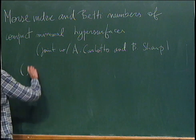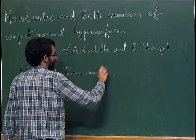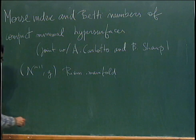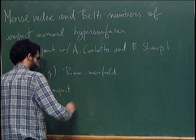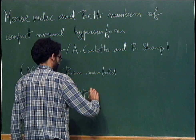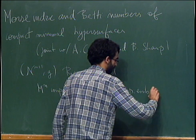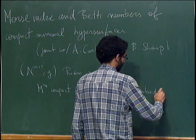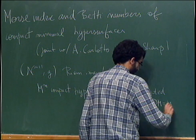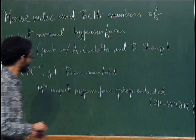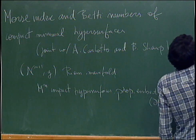I want to consider a complete Riemannian manifold and the area functional on the set of compact hypersurfaces that are properly embedded. By this, I simply mean that they are embedded in the usual sense, and are such that the boundary is precisely the set of points that intersect the boundary of the ambient manifold. The first step is, of course, to find the critical points, so we need the first variation formula.